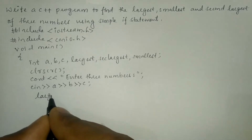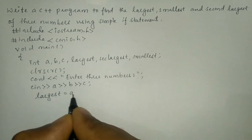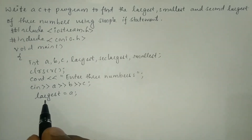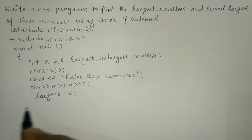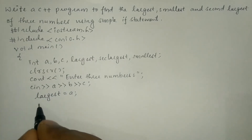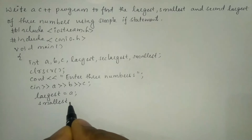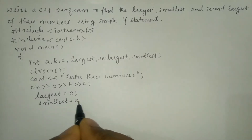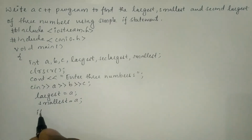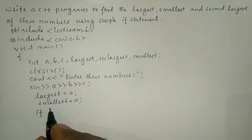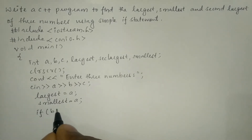Now let us initialize: a is assigned to the largest variable, so largest = a. Next, the smallest variable is also initialized to a, so smallest = a, followed by a semicolon.